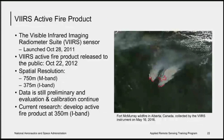The VIIRS sensor was launched aboard the Suomi NPP satellite in October 2011, and in 2012 the thermal portion of the sensor began operation, with the active fire product released in October 2012. The VIIRS product uses the M-band at 750 meters and the I-band at 375-meter resolution. The I-band products are still in beta version and they are currently trying to improve the spatial resolution to 350 meters. The active fire product can be viewed and downloaded on the VIIRS active fire web page, which will be demonstrated later.